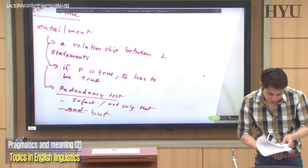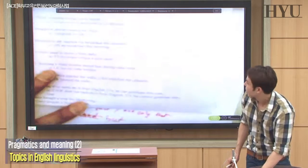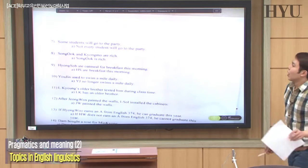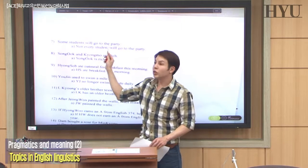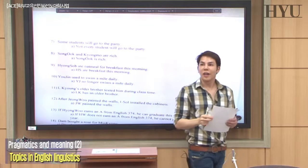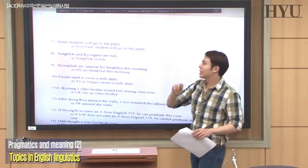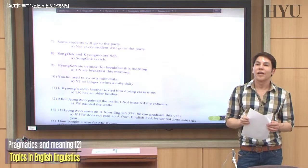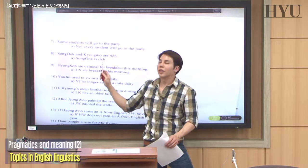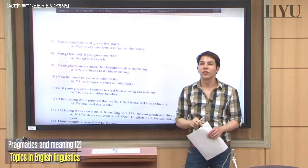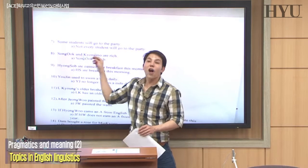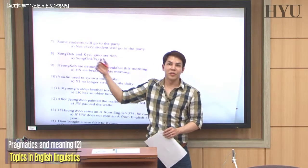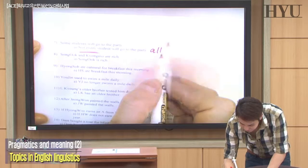Number seven: 'Some students will go to the party' and 'not everyone will go to the party.' Does the first entail the second? No — because all can go. When you say some students will go, it could also mean all of them go, so there's no entailment. Entailment must always be true with no exceptions.